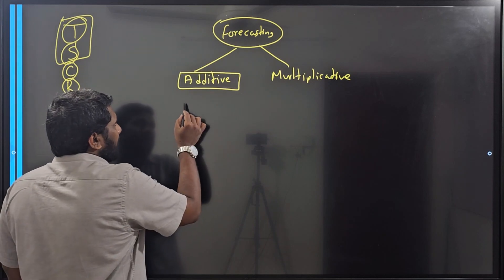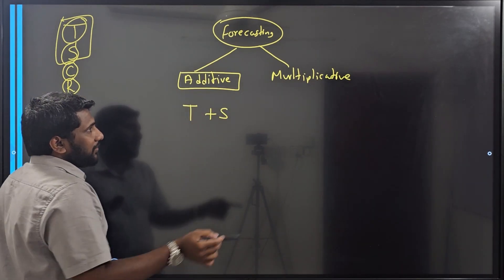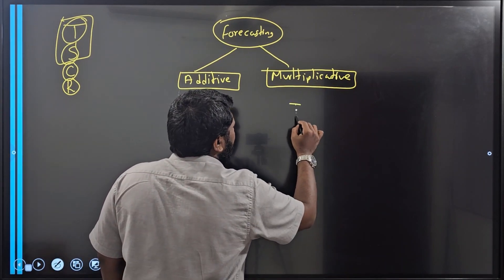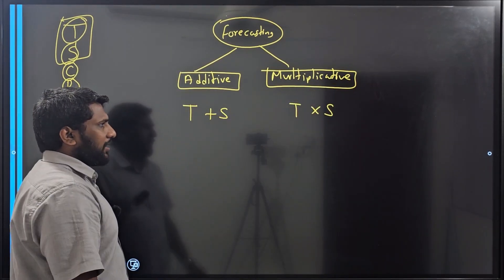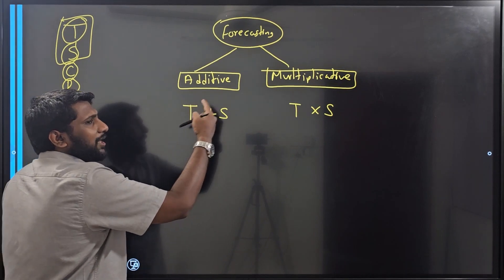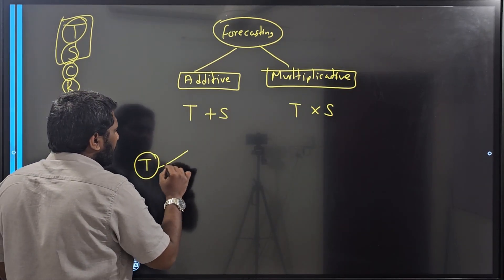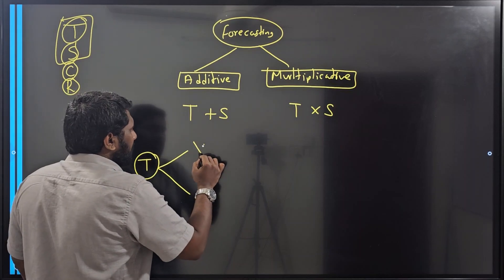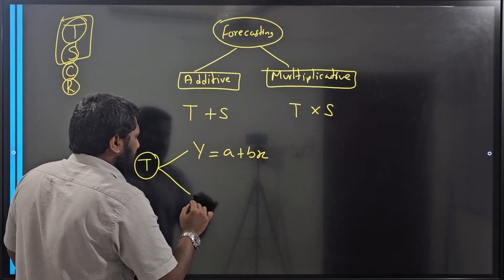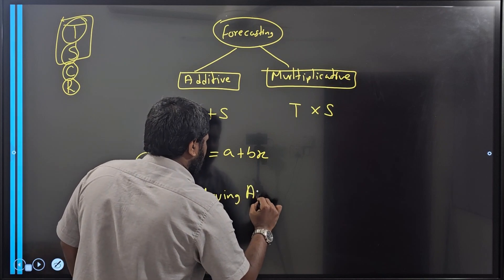Under the additive model, you take trend plus the seasonal factor when doing a forecasting. Under the multiplicative model, you take trend multiplied by the seasonal factor. To calculate the trend — whether additive or multiplicative model — there are two methods: one is y equals a plus bx, and another is the moving average method.